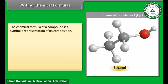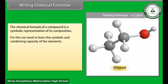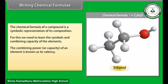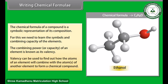Writing chemical formula: The chemical formula of a compound is a symbolic representation of its composition. For this, we need to learn the symbols and combining capacity of the elements. The combining power or capacity of an element is known as its valency. Valency can be used to find out how the atoms of an element will combine with the atoms of another element to form a chemical compound.